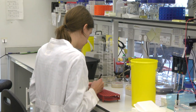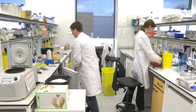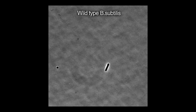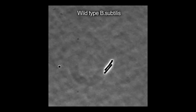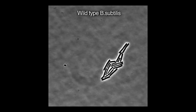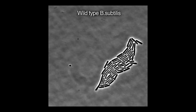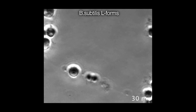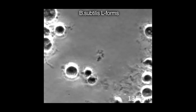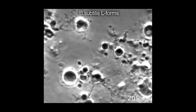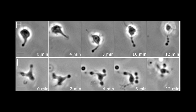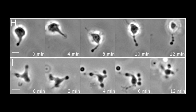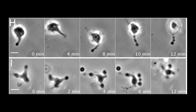We worked out how to select for L-form variants in that earlier work, and early on we came across two very big surprises. First of all, L-forms differ from normal cells in that they become completely independent of the FtsZ protein, which is essential for cell division in almost all bacteria. And secondly, the L-form cells divide and proliferate in a very haphazard manner — they're very heterogeneous in shape and in size.